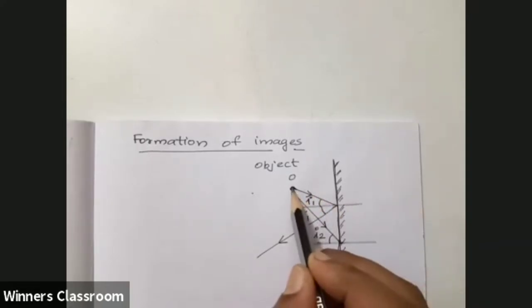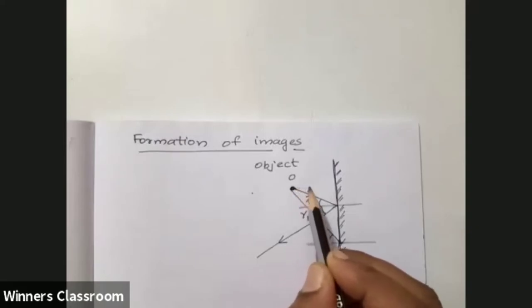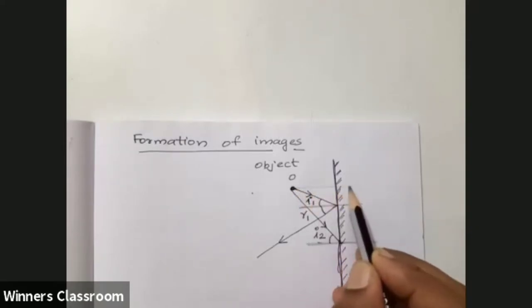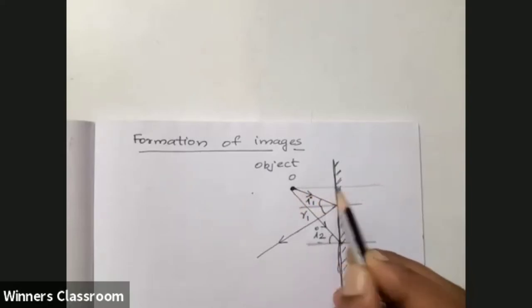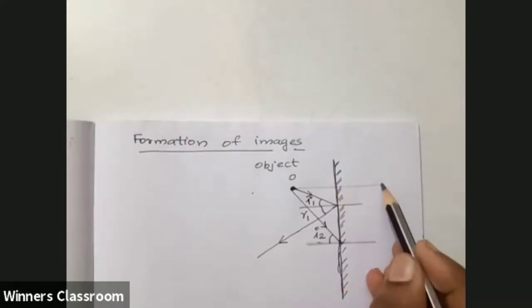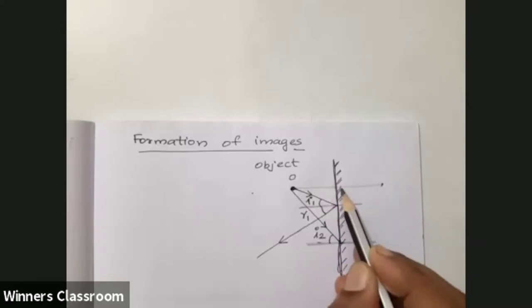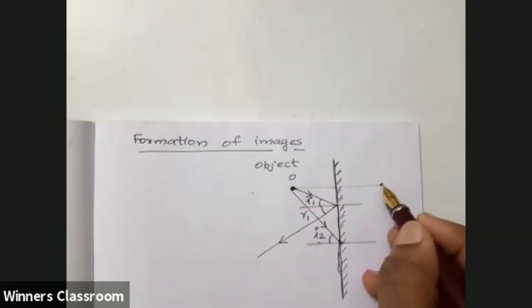I am going to mark where these rays meet to form the image. It is a point. You can see in the plane mirror, the image of the object is formed. The image will be equidistant from the mirror - objective and image are at equal distance.